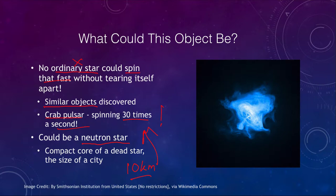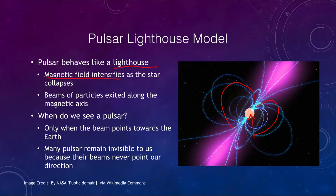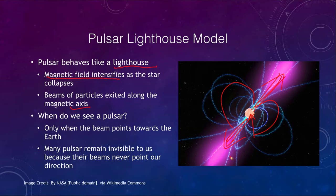Why do we detect pulses from some of these neutron stars? We use what we call the lighthouse model, in which the pulsar behaves like a lighthouse, beaming material that we can then see. As it collapses, the magnetic field intensifies. The bluish lines here are the magnetic field lines looping around the pulsar, and as it collapses down they become much more intense, forcing particles to beam out along the two axes. The charged particles trying to leave cannot cross the magnetic field lines, so they can only exit along the magnetic axis.